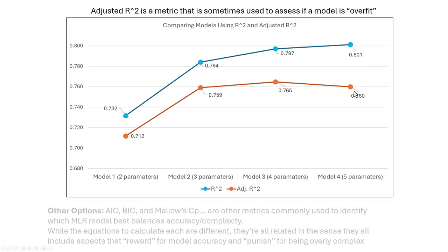Adjusted r-squared is not like that. Notice that as we go from model 3 to model 4, adjusted r-squared actually goes down. It isn't necessarily true that it had to start going down right there, but what it is communicating is that whatever additional predictor we introduced from model 3 to model 4 didn't have sufficient predictive power to warrant the additional model complexity. Adjusted r-squared punishes model complexity — it is tolerant of complexity as long as the predictors we're adding increase accuracy substantially, but if complexity doesn't come with meaningful prediction accuracy gains, it will produce lower and lower values.